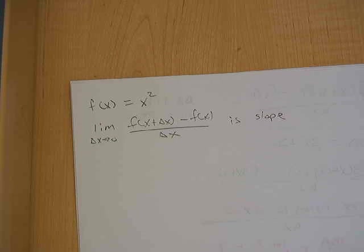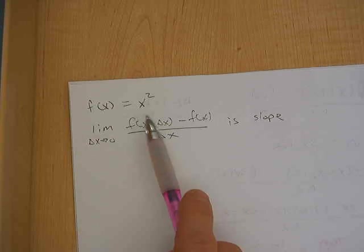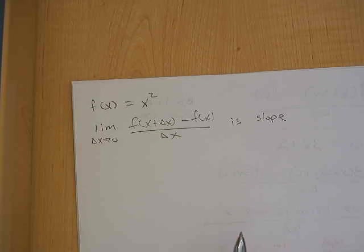Okay, we're going to find the slope of the tangent line to the function f of x equals x squared using the limit process.